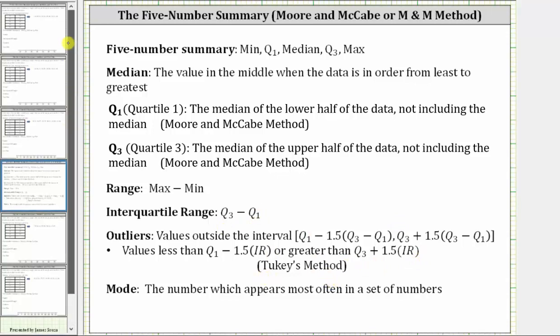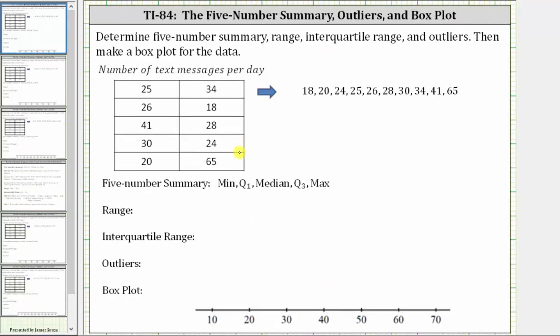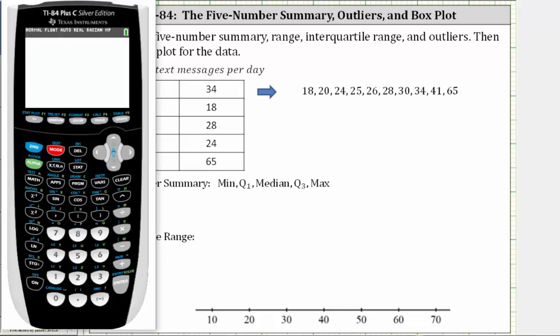So going back to our problem, the first step is to enter the data into the TI-84, either from the table or in order from least to greatest. To do this, we press STAT and then ENTER. We will enter the data in L1. If you have any old data in L1, you can go to the top of the column, press CLEAR, and then ENTER. It will clear the entire column. And now we enter the data.